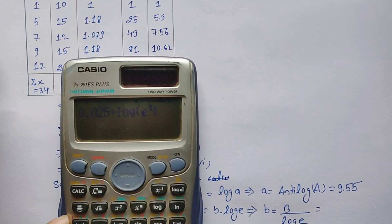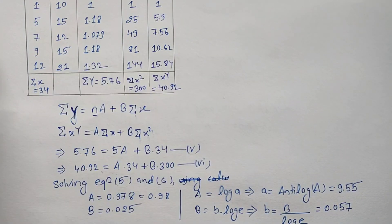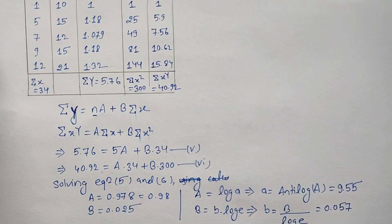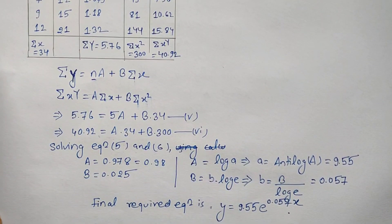Therefore the required final equation is y equals 9.55 times e to the power 0.057x. I hope I have made this clear to all of you. Do visit Civil Learning Online for more engineering-related topics, and see you in the next video. Take care and have a nice day.